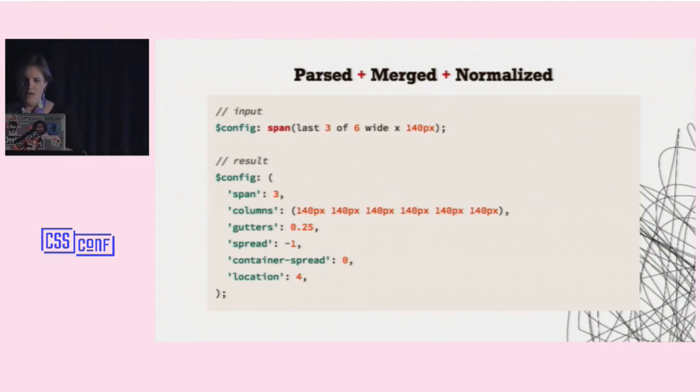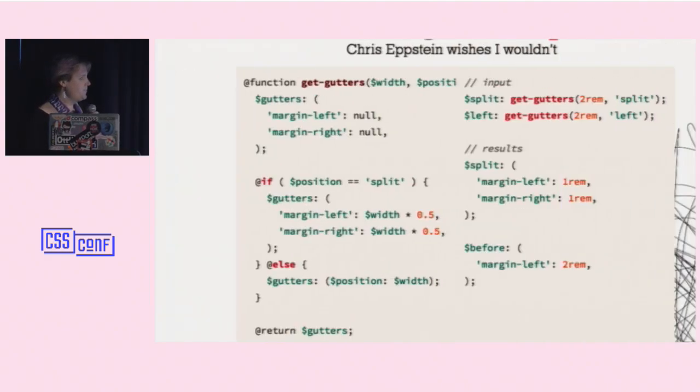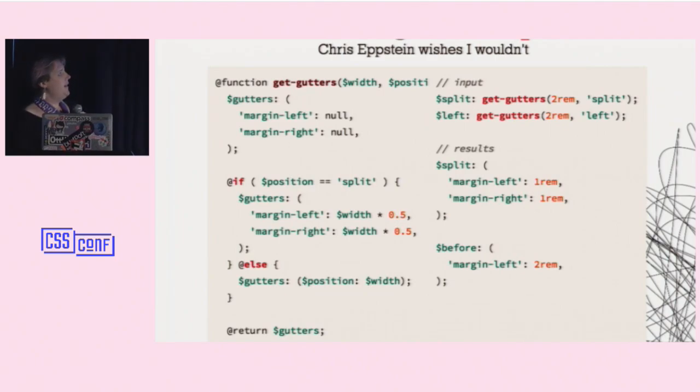So, in the end, we can parse it, merge it, and normalize it. And we get back. We've passed in last three of six wide by 140 pixels. And it parses and normalizes all of that and returns a config map that the Suzy internals can understand that shows all of the things, even the ones that weren't passed in. They got merged down to the factory default. And now we know everything we need to know about the grid based on this shorthand that you passed in. So, then we take that map and we want to convert it into a map that represents CSS. Chris Epstein hates when I do this. And he has good reasons for that. But I do it anyway. He doesn't always get what he wants. And the usefulness is that I can pass around this pseudo CSS and make changes to it. And I'll show you why. So, but here it is.